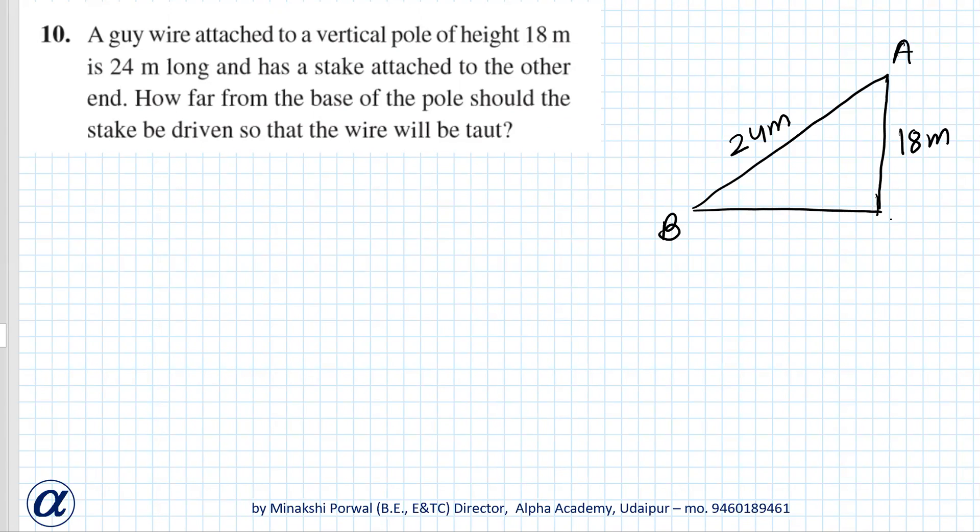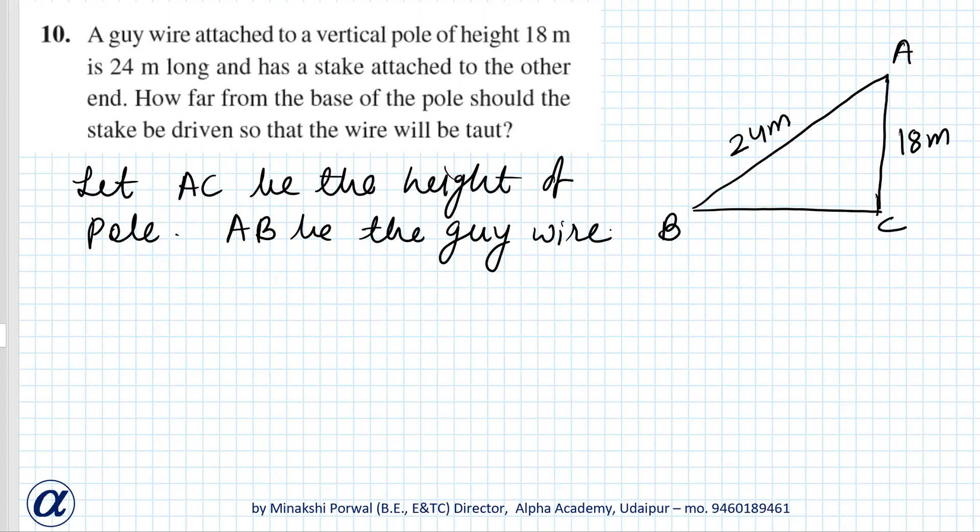So let AC be the height of pole. AB be the guy wire. So we have to find distance BC.